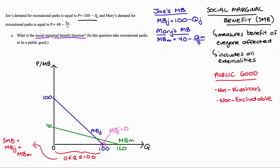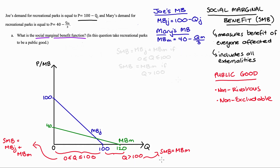For any quantity after 100, Joe's marginal benefit curve just doesn't exist — he doesn't get any benefit from those quantities. So our social marginal benefit would just be equal to Mary's — only she benefits. This gives us our piecewise algebraic formulation: social marginal benefit equals the sum of Joe and Mary's marginal benefit functions if Q is between 0 and 100 inclusive, but equals just Mary's marginal benefit if Q is greater than 100.